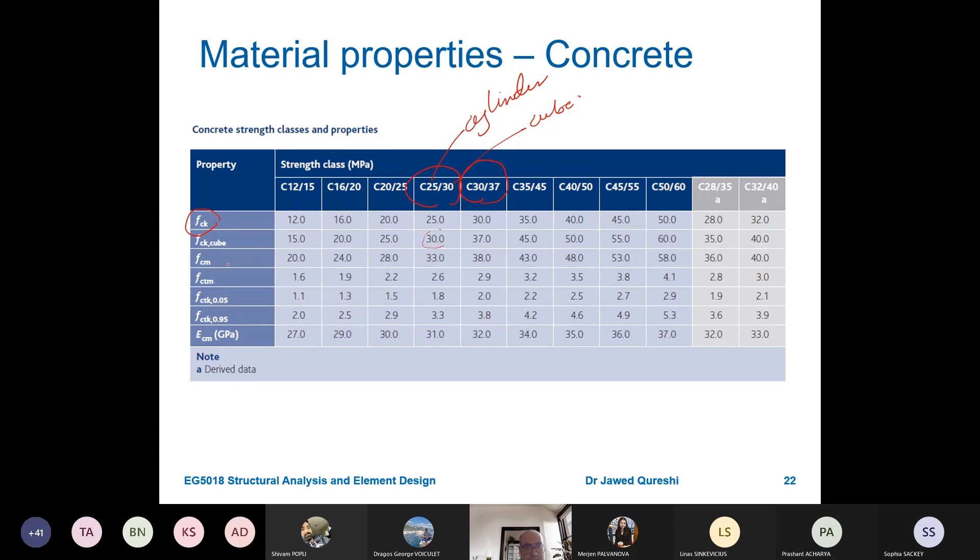fck cube is obviously higher, fcm is the mean strength, and fctm is the tensile strength. So you can see that here it is roughly 10 percent of its compressive strength.